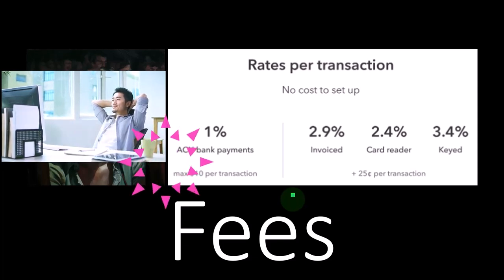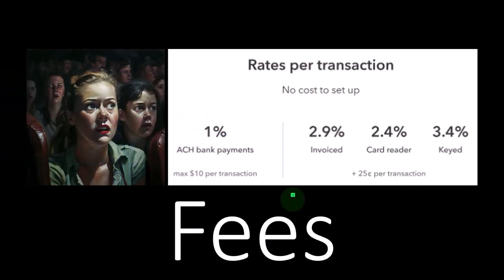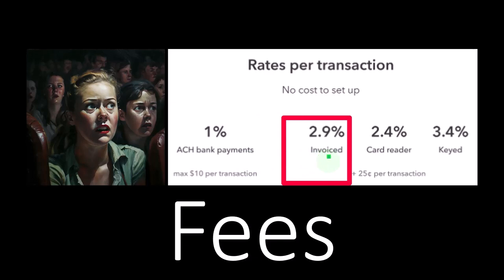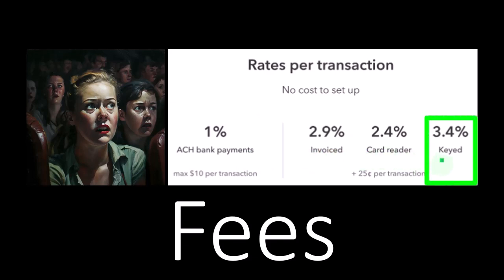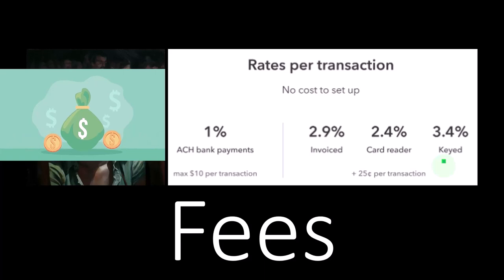In those cases you want to send out the invoice and say, 'I'm going to give you any payment option that you feel most comfortable with,' and there will of course be fees related to those. There are different fees depending on the kind of payment chosen: ACH bank payments at 1%, invoiced, the card reader, and the keyed option where you punch in the information. If you're diving into the fee structure, you can research it at any point to get current fees, and you might want to talk to a QuickBooks Pro Advisor to see if they have any discounts on the fees as well.